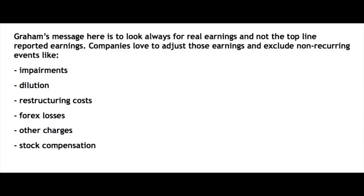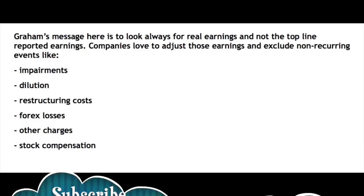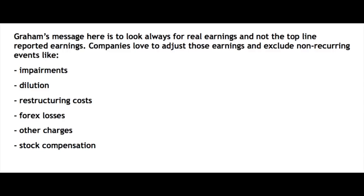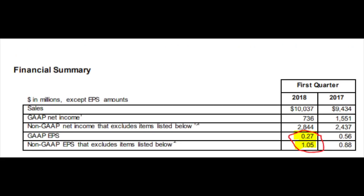Management always reports better than what earnings actually are, claiming certain things must be adjusted to show how the real business performed. Those things are usually called non-recurring events and include impairments, dilution, stock compensation, restructuring costs, forex losses, and other charges. However, those are all real costs. Let me show you my favorite example.